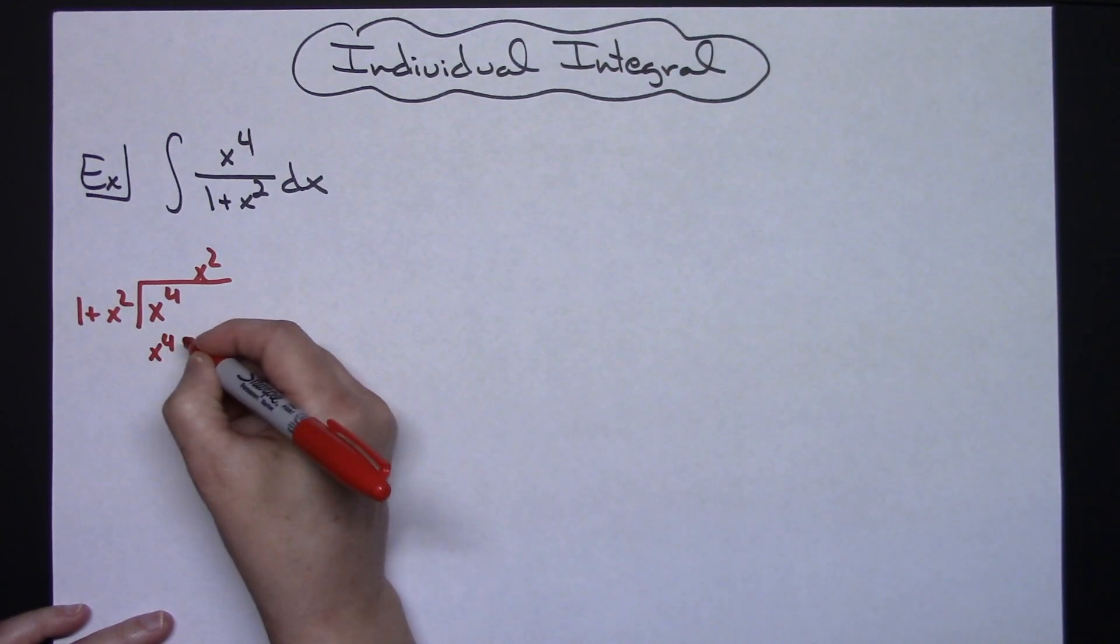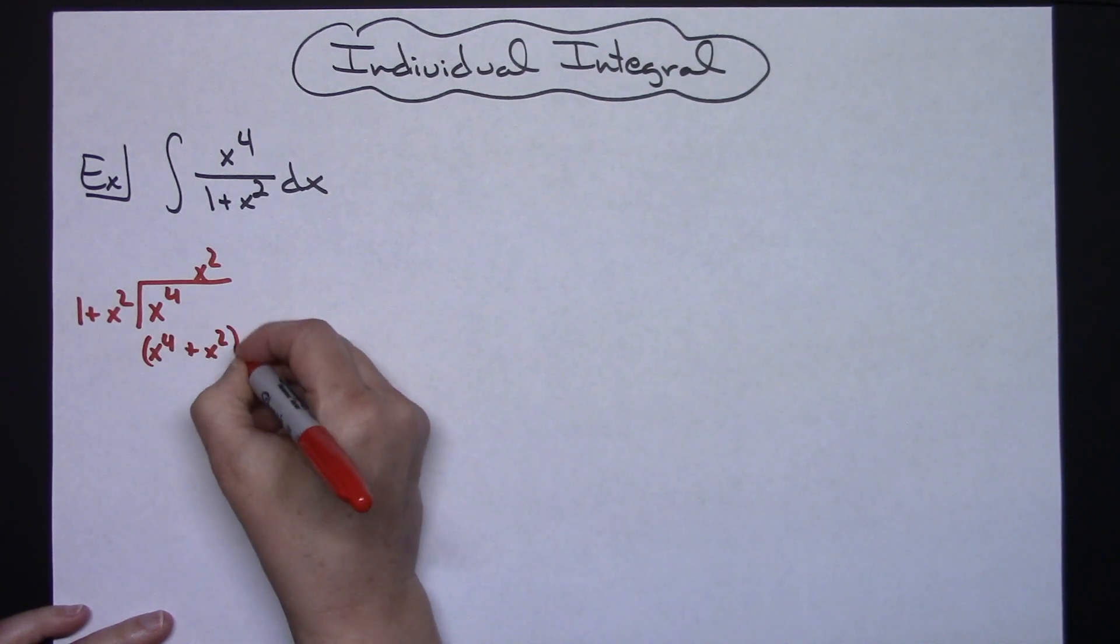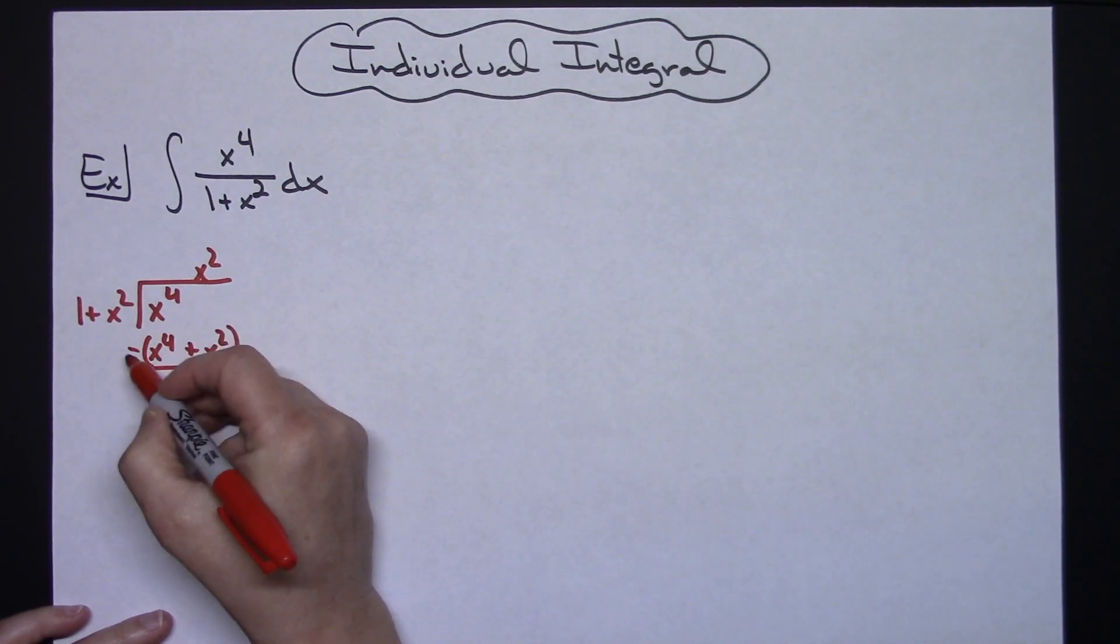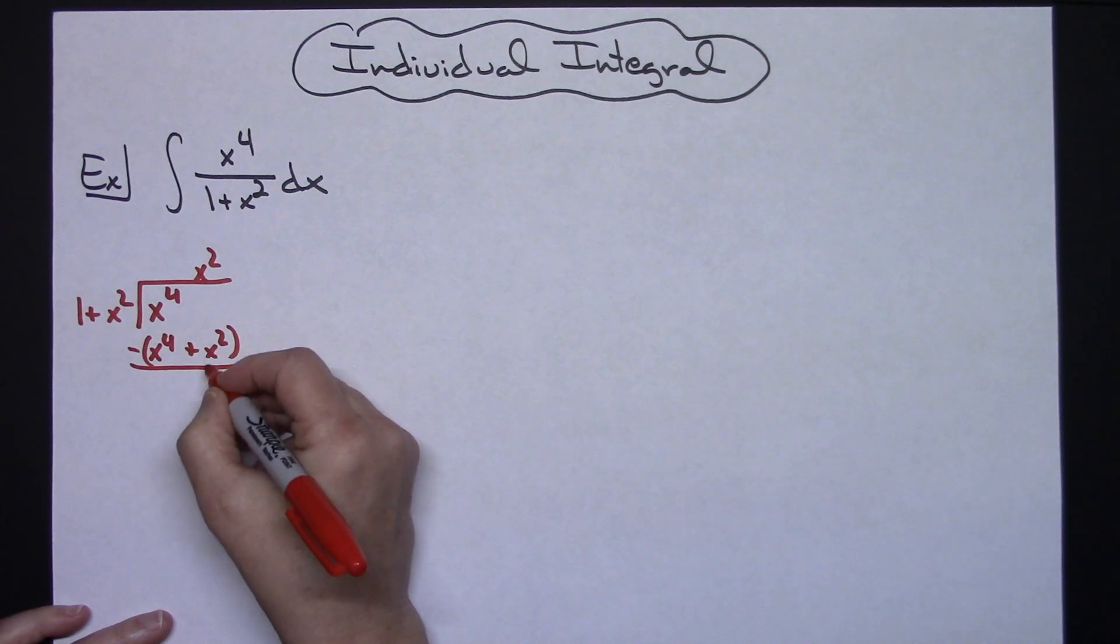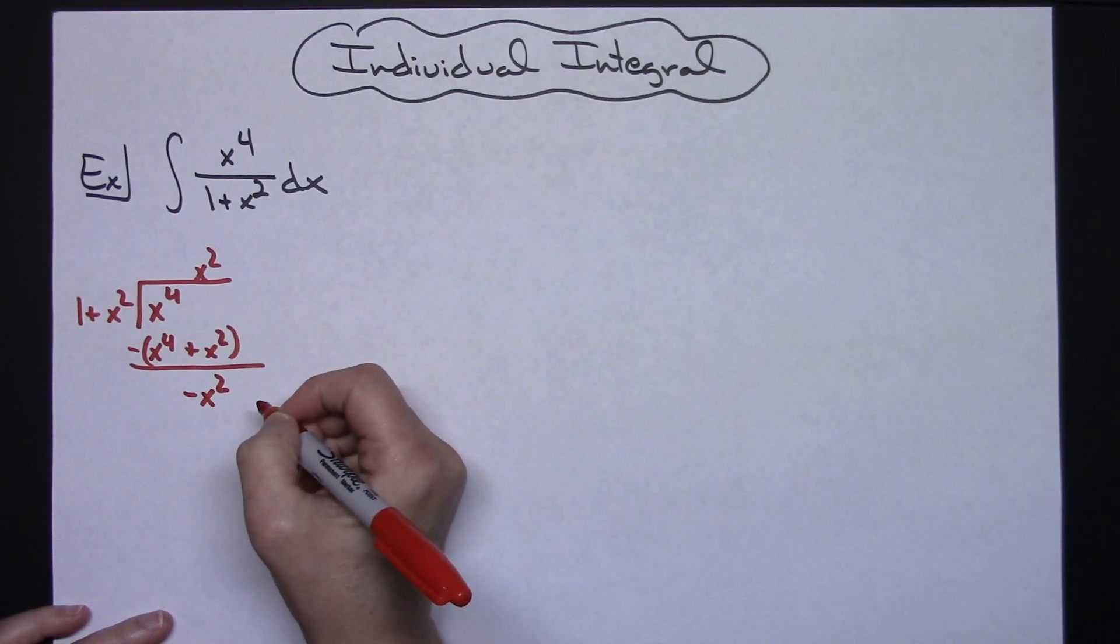x squared times 1 will give me x squared. We'll be subtracting those quantities so the x to the fourth will fall out. That'll leave me with negative x squared right there.